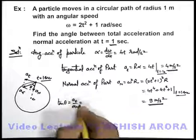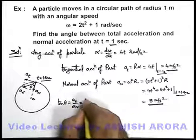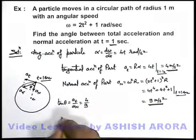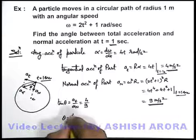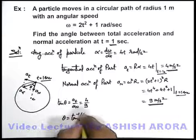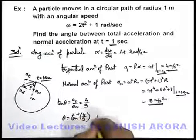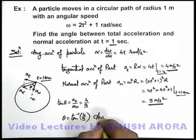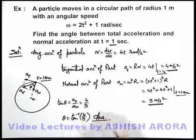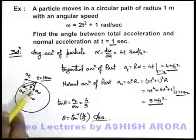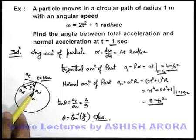At t equals 1 second, tan theta equals 4 by 9. So the angle theta can be written as tan inverse of 4 by 9. That is the answer to our problem, where we were required to find the angle between total and normal acceleration at t equals 1 second.